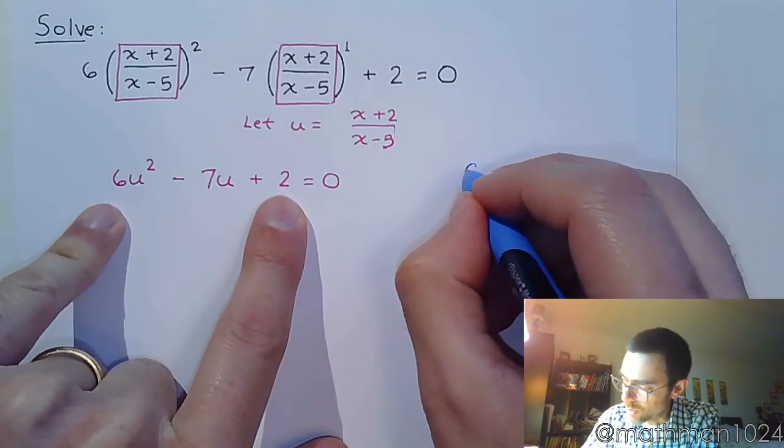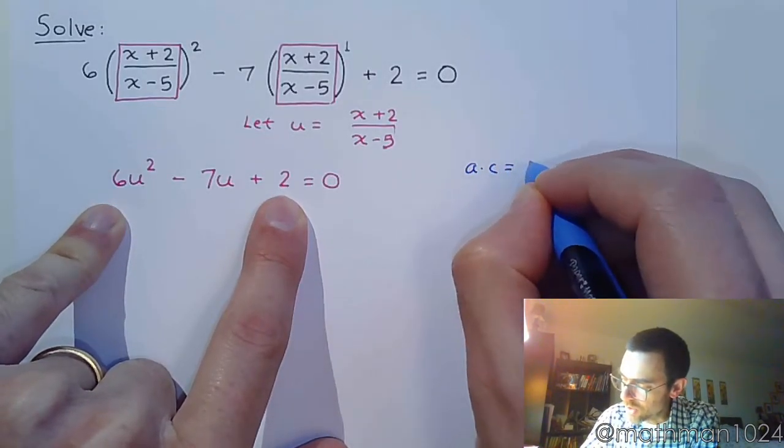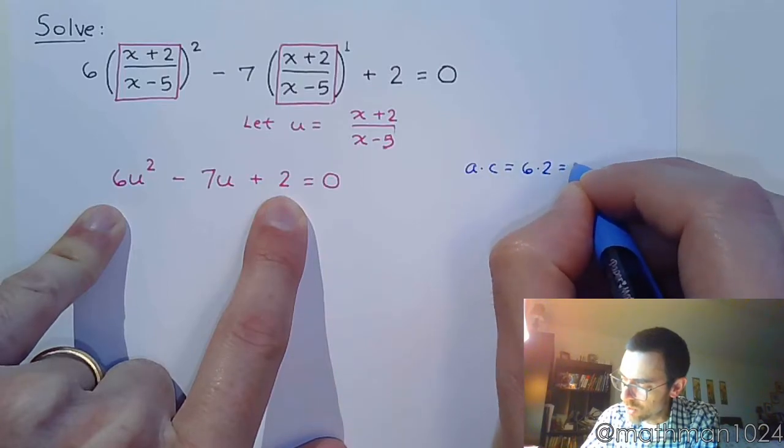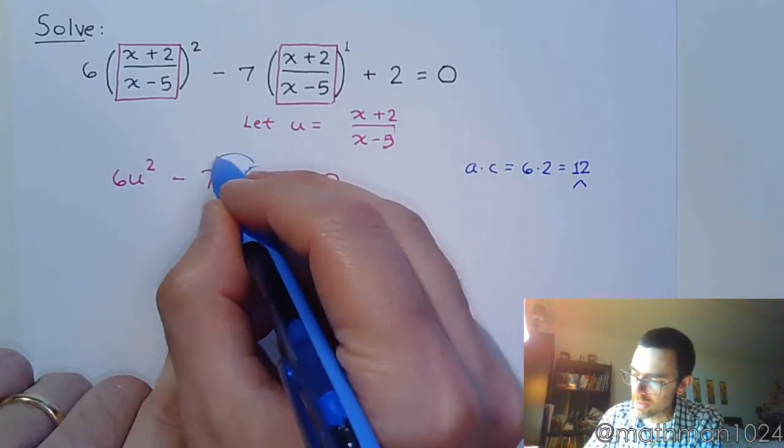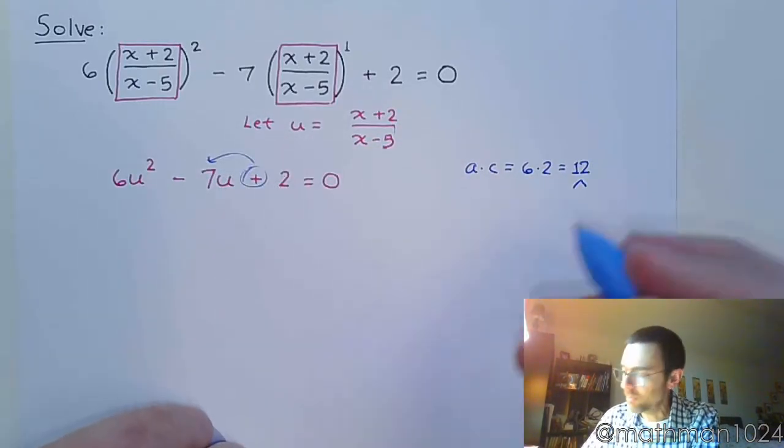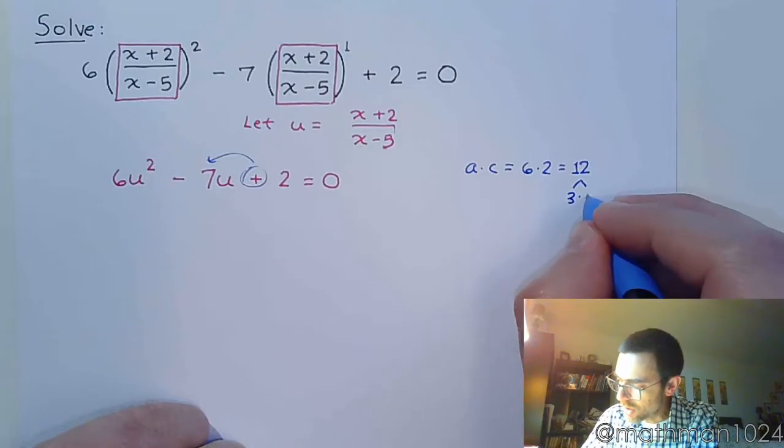So the AC method, let's just check this real quick. The AC method would say, do 6 times 2, and we get 12. And find the factors of 12 that can add to 7. And those factors, of course, are 3 and 4.